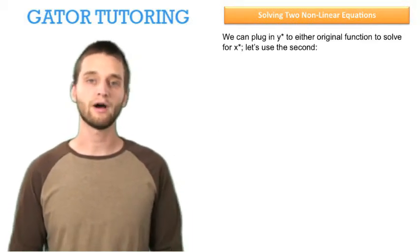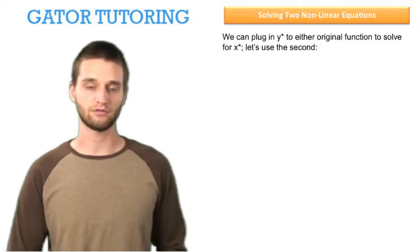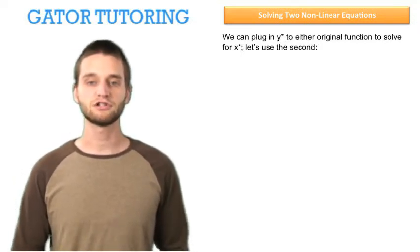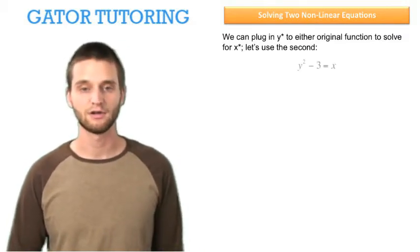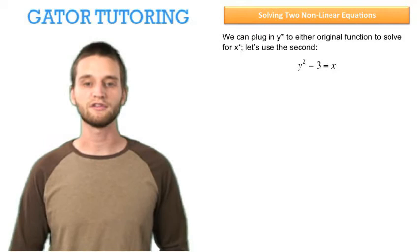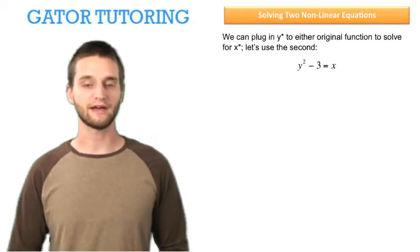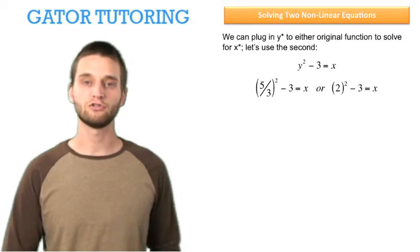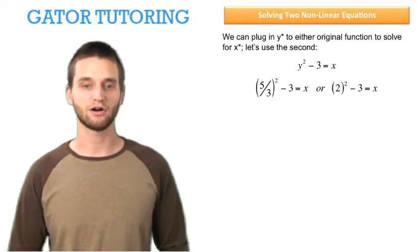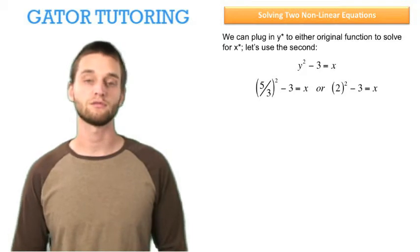We can plug in y star, both of these two answers for y star, into either original function to solve for x star. Let's use the second equation to solve for x star. So here's our second equation, y squared minus 3 equals x. We're going to plug in our two solutions that we got from the first part for y star. One of them was negative 5 thirds, the other was 2.